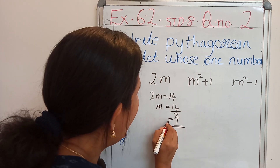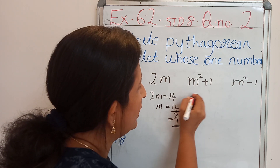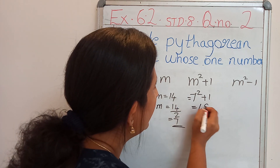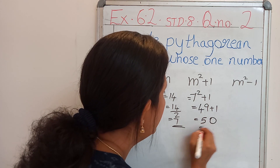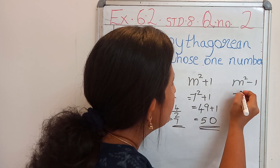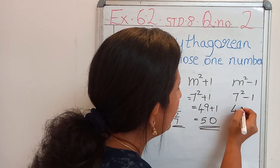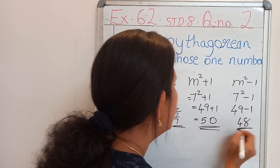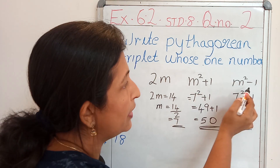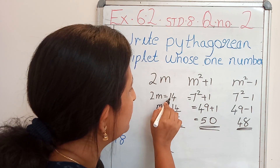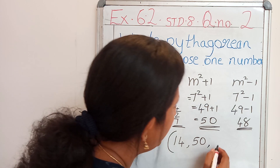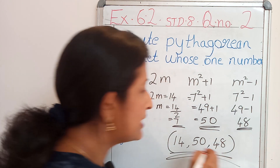2m is 14. Substitute the value of m: m square plus 1, that is 7 square plus 1 equals 49 plus 1 equals 50. Then m square minus 1, that is 7 square minus 1: 49 minus 1 that is 48. Pythagorean triplets are 2m, m square plus 1, and m square minus 1, so rewrite the values: 2m is 14, m square plus 1 is 50, m square minus 1 is 48. These 3 are the Pythagorean triplets.